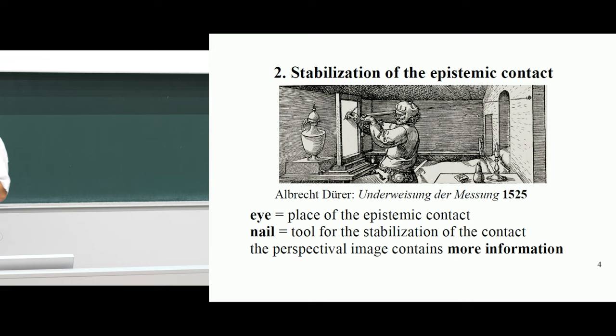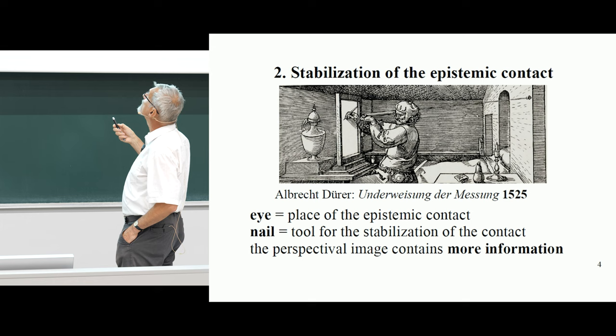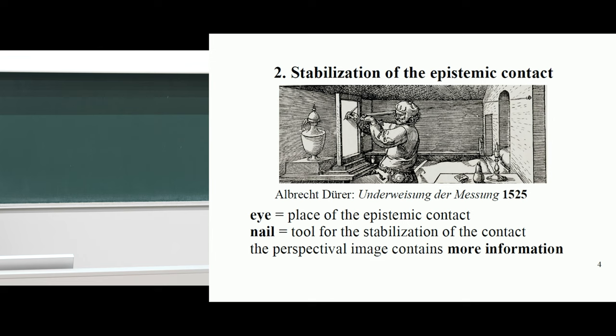By stabilization of epistemic contact, this painter's epistemic contact is always just visual contact. But it is stabilized in a way that he is not moving, not changing his position — the entire construction is done from a fixed point. And this brings many things into the representation.